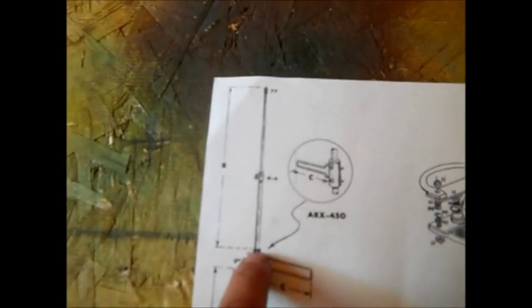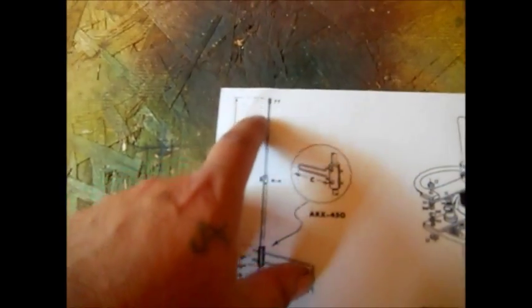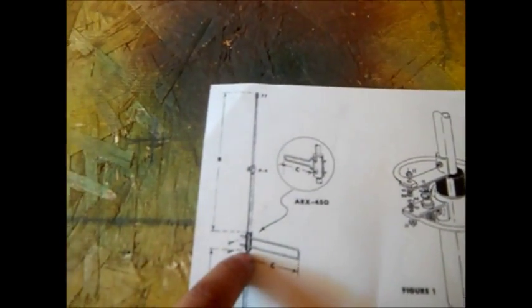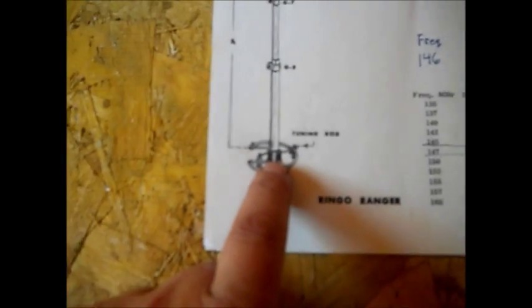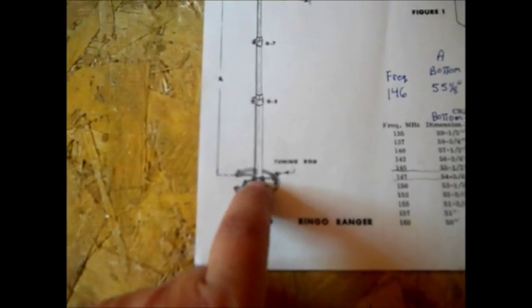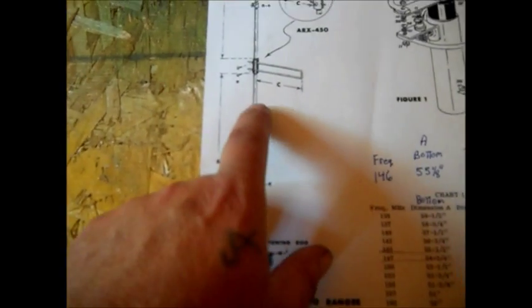When you measure, measure from that black piece of plastic to the very tip. That is B, the top. When you measure the bottom, measure from this plastic down to the top of the plastic down here. So if it ain't in focus, measure from the plastic to the plastic.